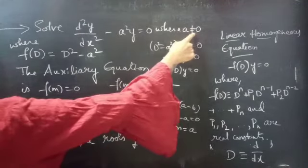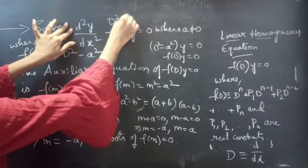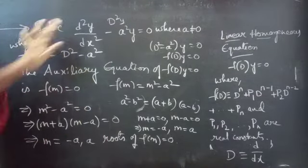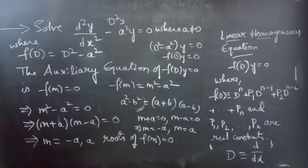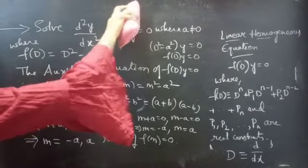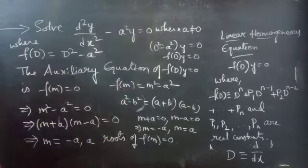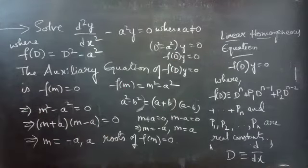This also explains why we require a ≠ 0. If a equals zero, the equation reduces to D²y = 0 and we don't get a term involving a constant pn without y, so we cannot properly solve that equation in the same manner. That is why a ≠ 0 is specified.